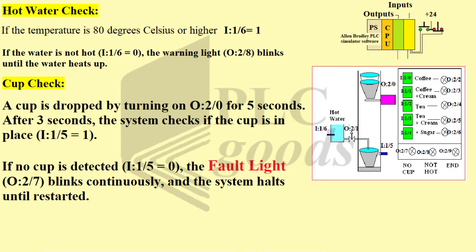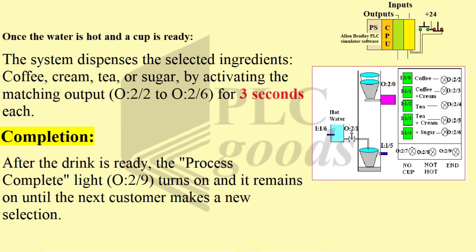Cup check: a cup is dropped by turning on O0 for 5 seconds. After 3 seconds, the system checks if the cup is in place — I5 is set to 1. If no cup is detected, I5 is set to 0. The fault light O7 blinks continuously and the system halts until restarted.